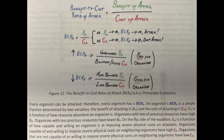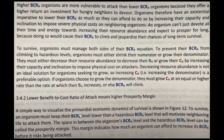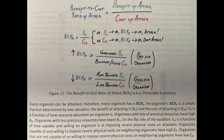Figure 11 shows the equation: benefit-to-cost ratio of attack equals benefit of attack over cost of attack. The resultant number will tell you to attack or not to attack based on the cost versus the benefit. Every organism can be attacked; therefore, every organism has a BCRA. An organism's BCRA is a simple fraction determined by two variables: the benefit of attacking it, BA, and the cost of attacking it, CA.